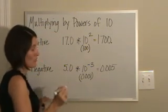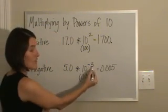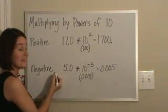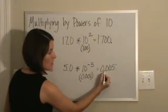I also know that a negative 3 tells me to move this decimal three places to the left. So, that's why my decimal is now here.